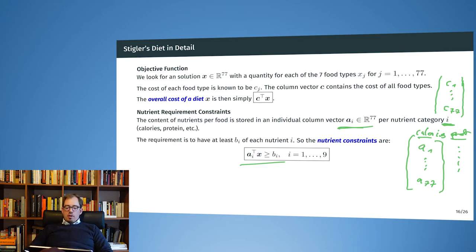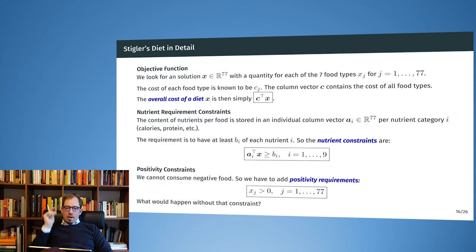Moving on, positive constraints. These are straightforward. I have 77 food types, and I just add the constraint X_J larger than 0. Overall I have a linear optimization target function, I have 9 inequality constraints for the nutrient content, and I have 77 inequality constraints for the positivity. This makes up the optimization problem of Stigler's diet.